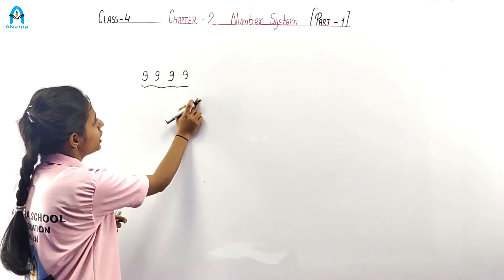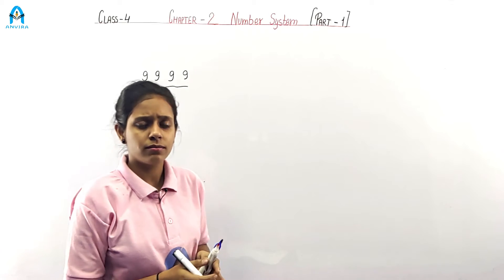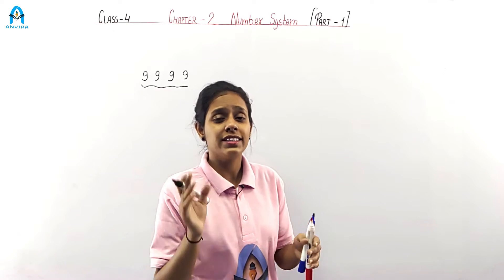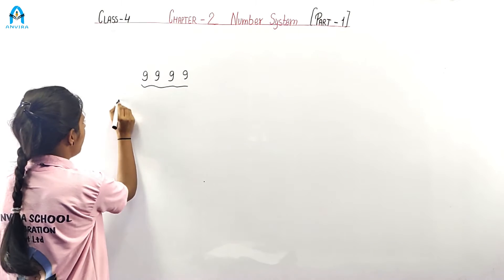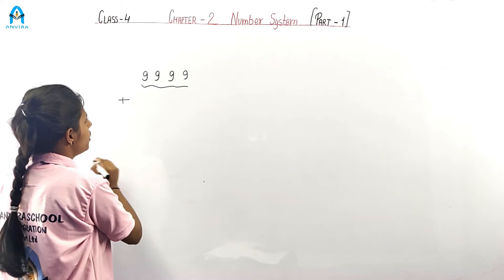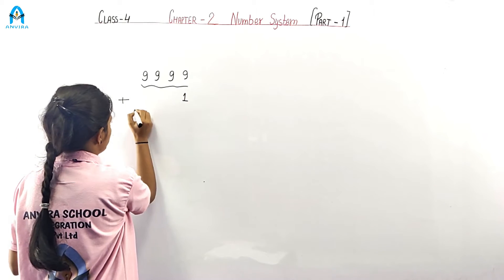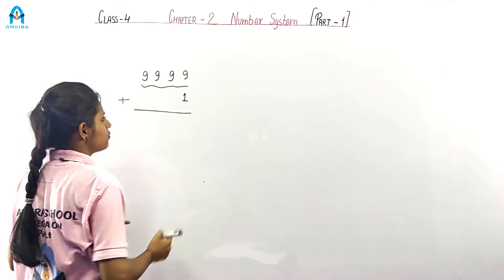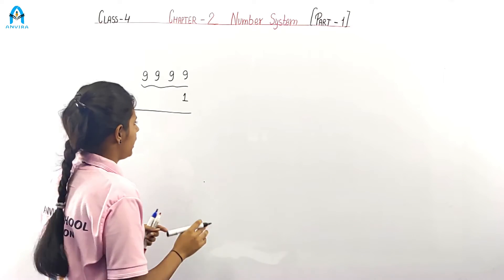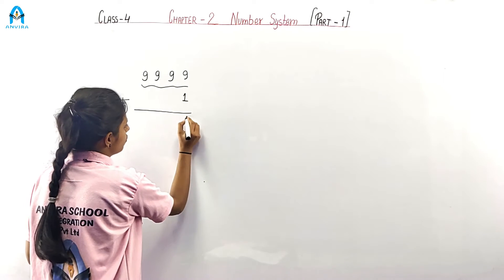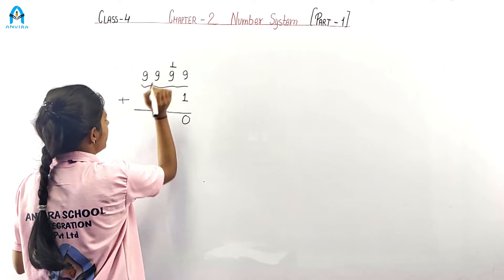So what comes after 9999? Let's add 1 to find the next number. So add 1. 9 plus 1 is 10. So here we write 0 and carry 1.